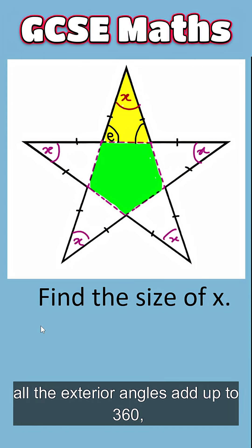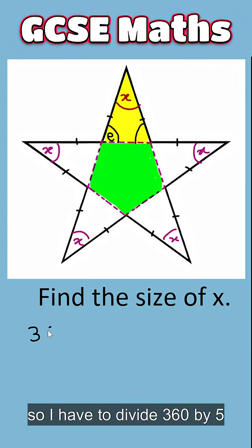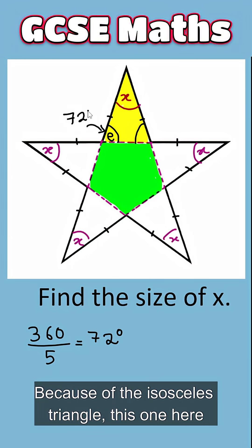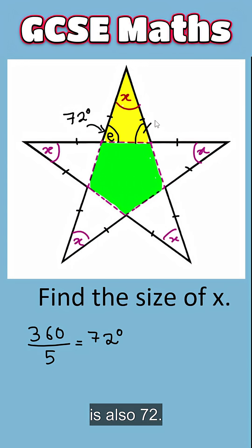Remember all the exterior angles add up to 360. So I have to divide 360 by 5 to find the size of one of them. Because of the isosceles triangle, this one here is also 72.